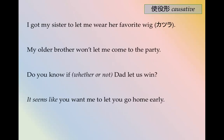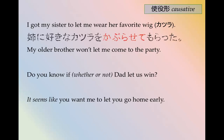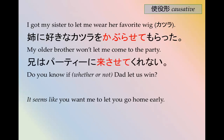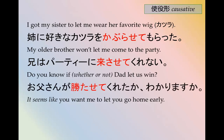More examples. I got my sister to let me wear her favorite wig — katsura: 姉に好きなかつらを被らせてもらいました。 My older brother won't let me come to the party — くれる in the negative: 兄はパーティに来させてくれない。 Do you know whether or not dad let us win? — embedded question: お父さんが勝たせてくれたかどうかわかりますか?